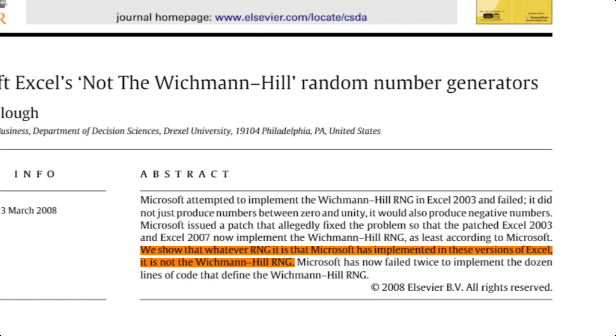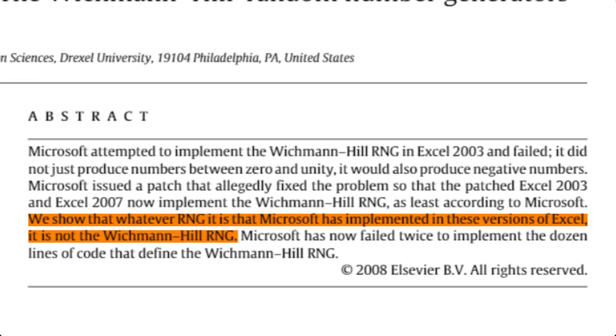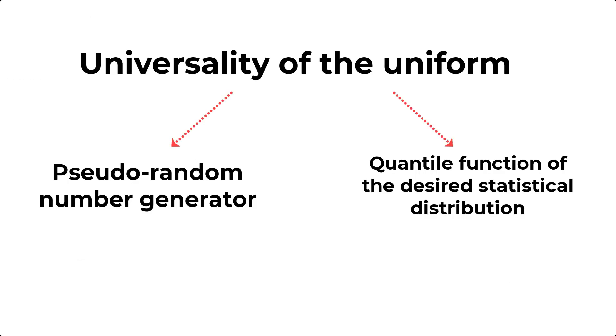However, there are people in the academic literature which seems to disagree with this. Taking a step back here, let's talk about the second input that the universality of the uniform requires, namely the quantile function of the desired statistical distribution.